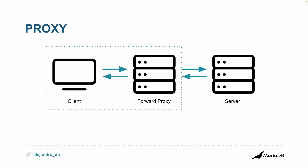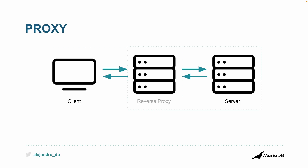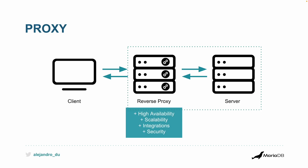If the proxy is on the local network of the client, it's usually called a forward proxy. If it's located in the local network of the server, it's called a reverse proxy. Reverse proxies have the advantage that they can add functionality without having to modify the client — things like high availability, scalability, integrations with other systems, and security improvements.